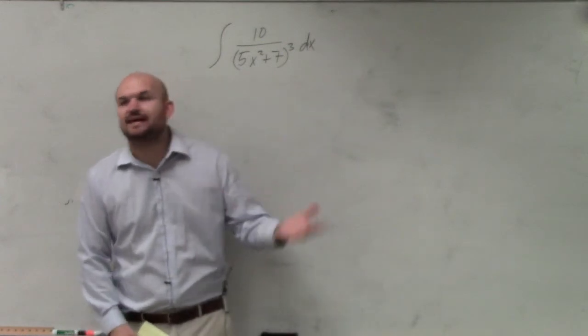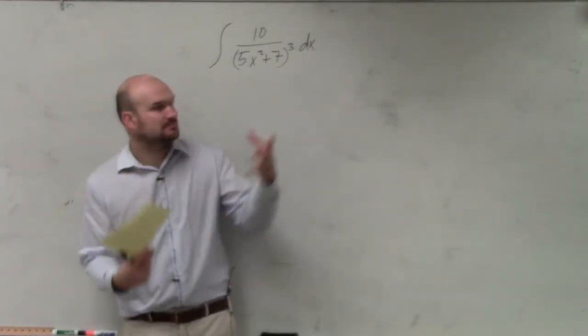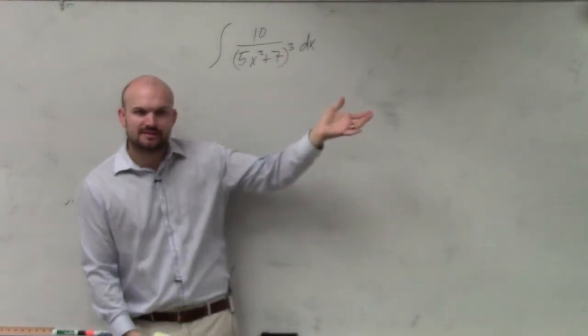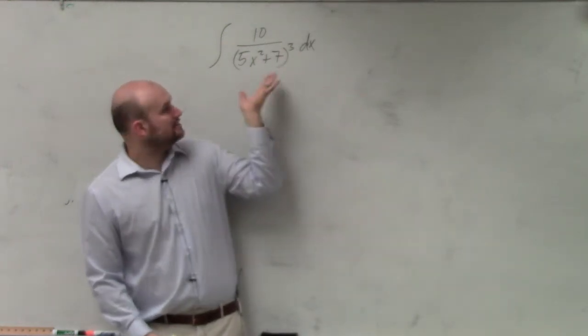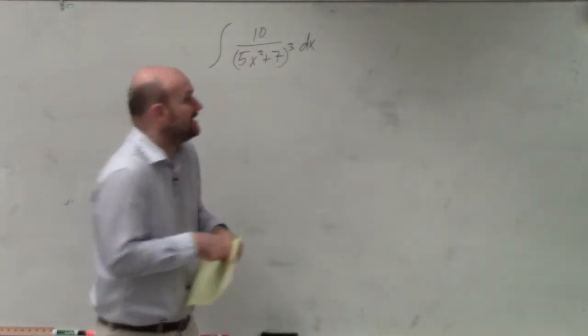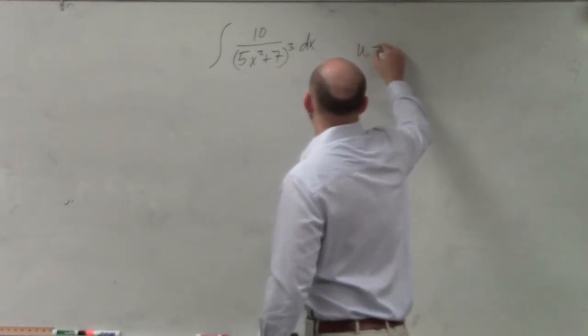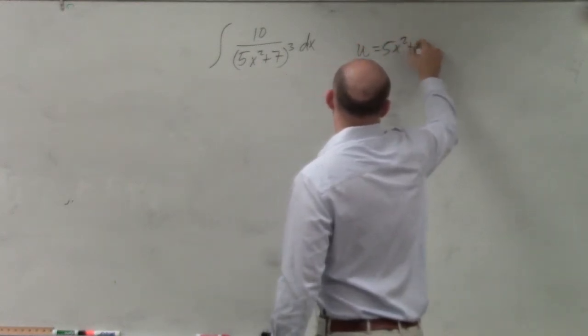Again, a key takeaway or a giveaway is whenever you see a quantity raised to a power, we know that's going to be basically our u, right? So we look at our u and say, all right, 5x squared plus 7. And again, maybe we're wrong, but maybe we're right.